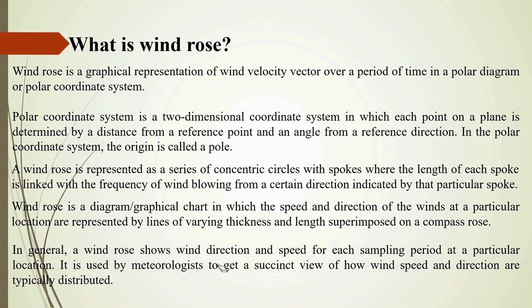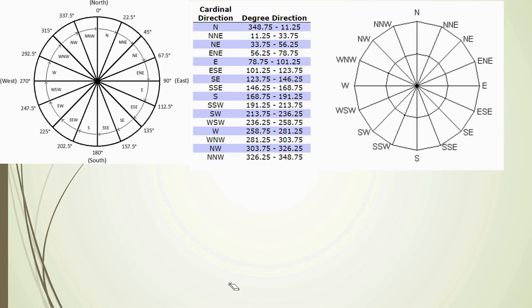In general, a wind rose shows the wind direction and speed for each sampling period at a particular location. It is used by meteorologists to get a succinct view of how wind speed and directions are typically distributed.